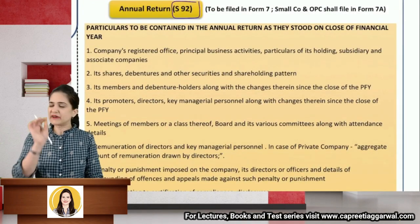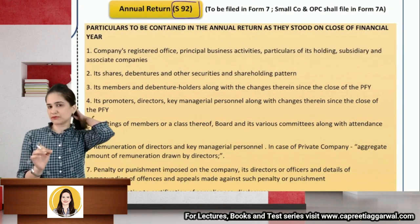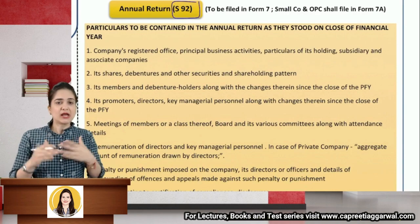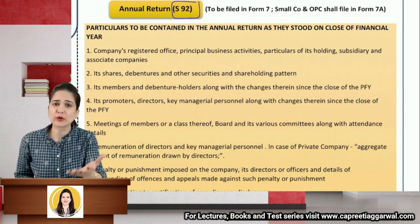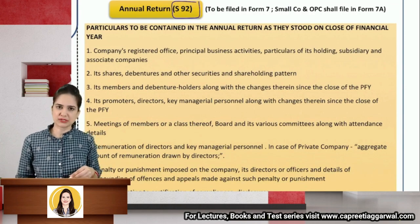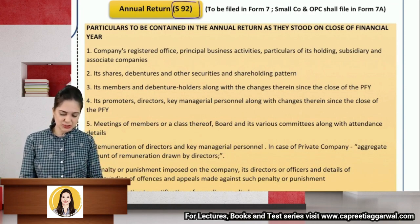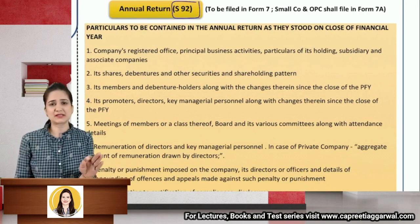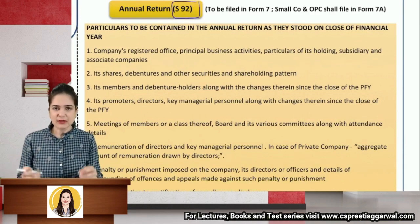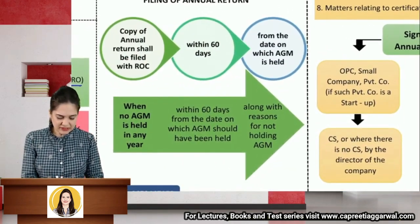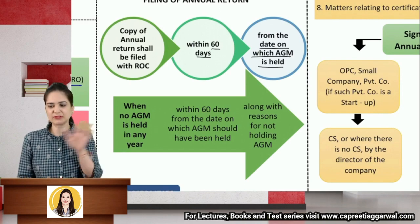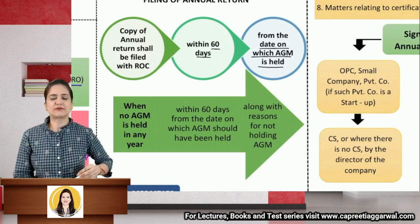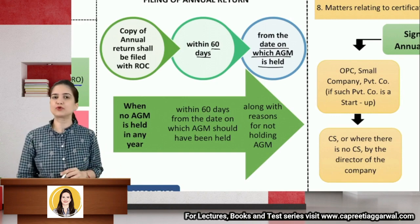Section 92 on annual return is very frequently asked in the exam — I've seen it asked in three consecutive attempts, and once two questions were asked on it in a single attempt. The annual return is just a compliance requirement. You file Form MGT-7, which contains both financial and non-financial information, with the ROC within 60 days from the date the Annual General Meeting is held.